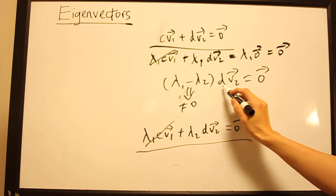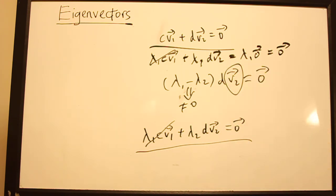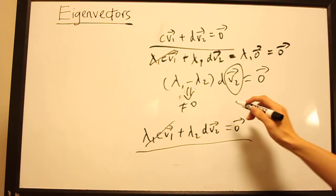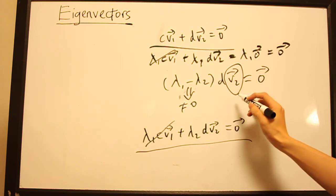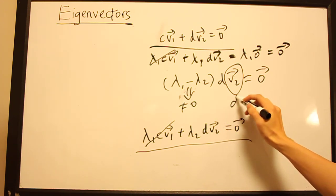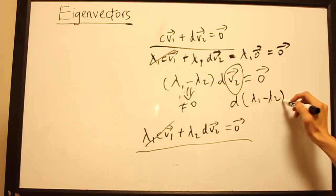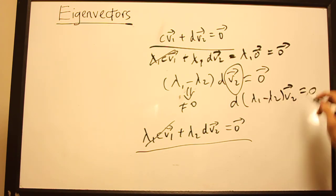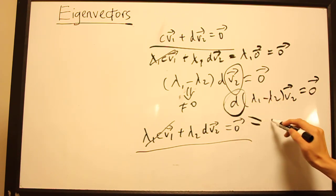And this term might or might not be 0, but we know that this is not 0 because recall that our eigenvectors cannot be a 0 vector. Otherwise, everything will be an eigenvalue of T. So what we have is that D times some non-zero vector, which is (λ₁ - λ₂)V₂, equals 0. And that brings us to the conclusion of proof where we have to conclude that D is 0.